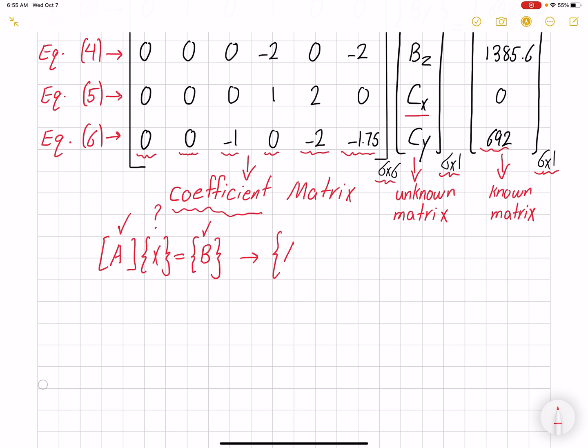So I can say that x would be the inverse of A. I multiply each side of the equation by inverse of A, times B, and that's matrix multiplication.